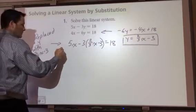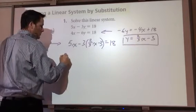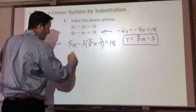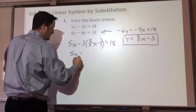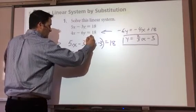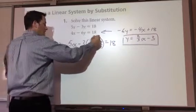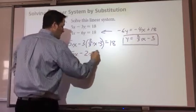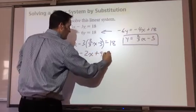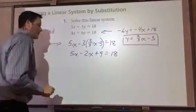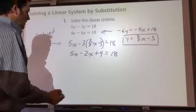Now, I'm going to do the distributive property. So, I get 5x minus 3 times 2 is 6 divided by 3 is 2. So, I get minus 2x negative 3 times negative 3 is positive 9. And that's going to equal 18. Are we getting anywhere? Yes, we are.